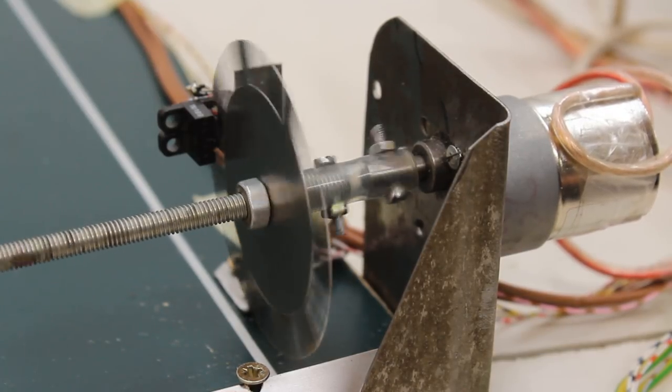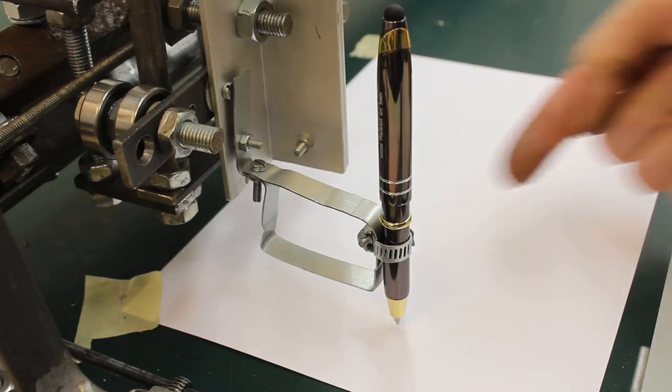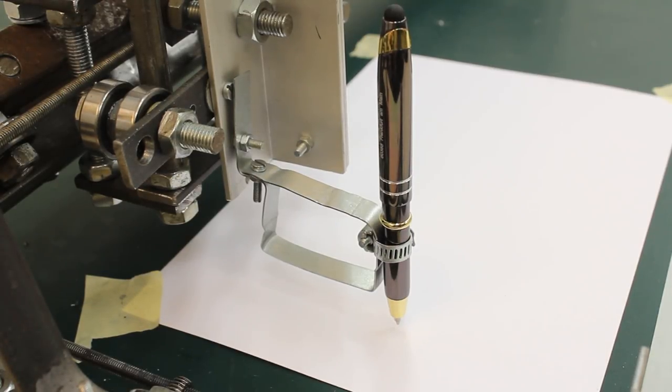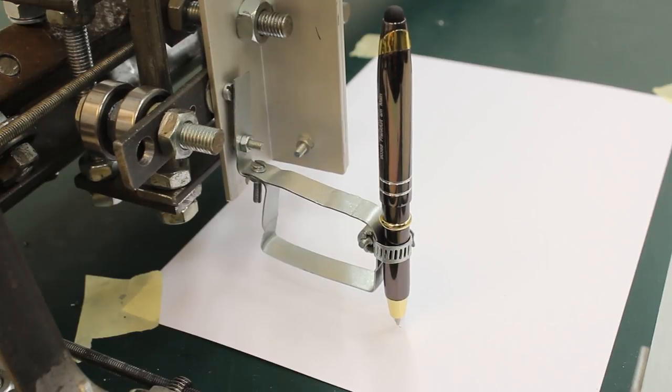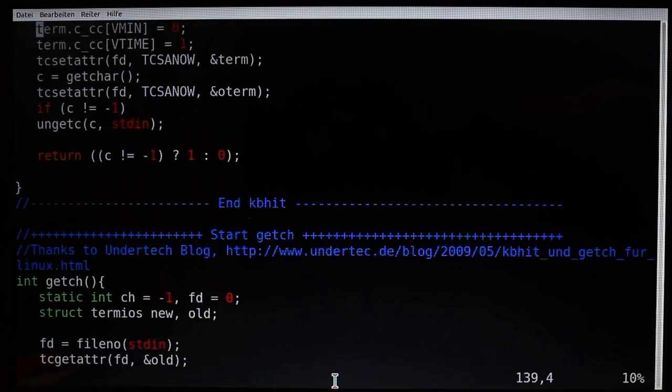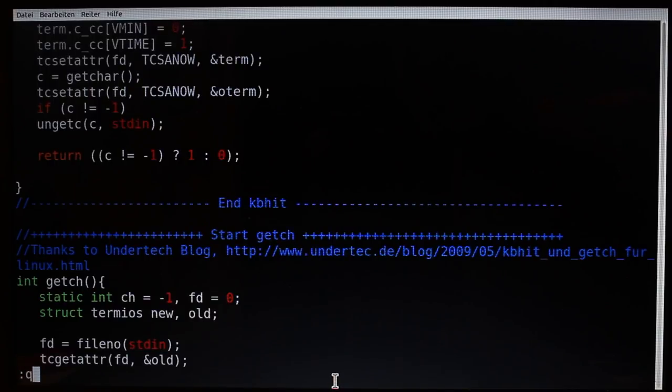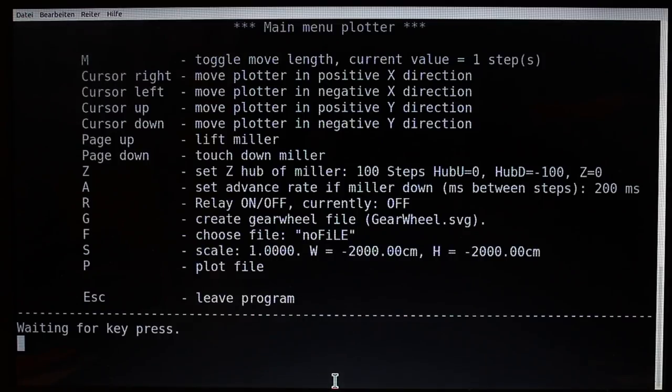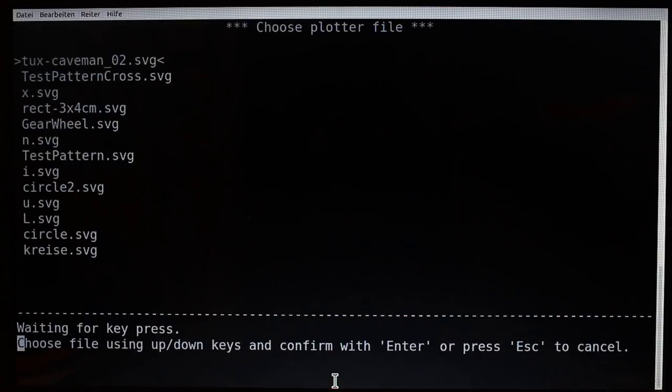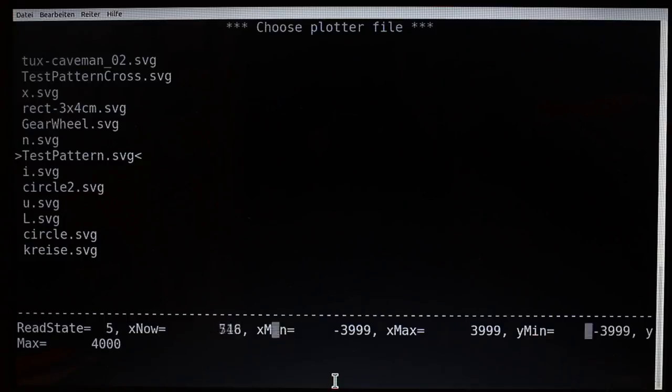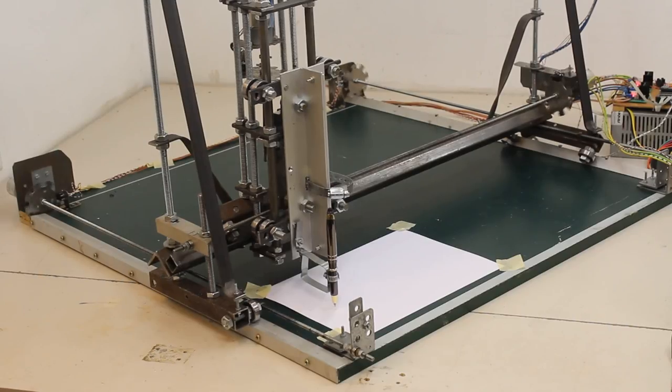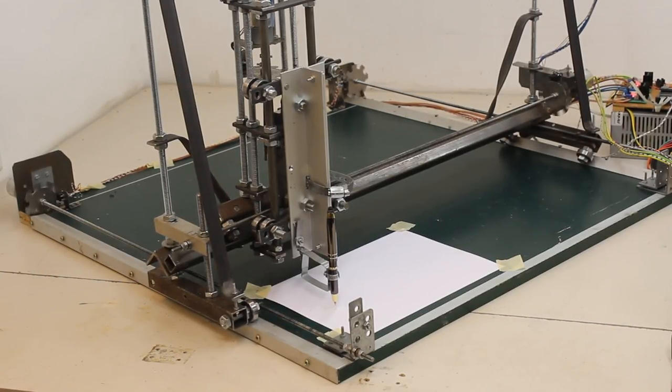Now the machine is ready to run. First I would like to draw a test pattern on a piece of paper, thus I have attached a ball pen to the carriage of the Z axis. The software used to control the machine is written in C and is running from the command line. With the menu you can choose the test pattern and set some variables. With sending the start command, the machine begins to plot the file.